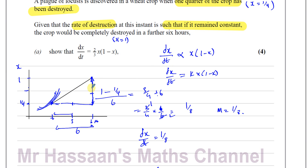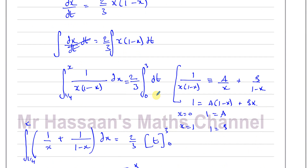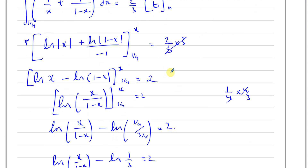After six hours the crop would be completely destroyed — but they're not saying it's a straight line. The phrase 'if it remained constant' just gives us a way to find the value of k: at that instant, the gradient is 1/8. It's not saying that's the gradient all the way through. And what would be the point of giving us a differential equation if it were just a straight line?